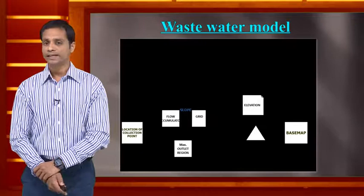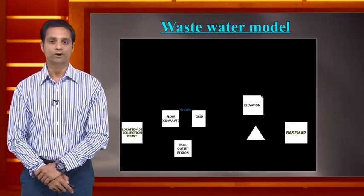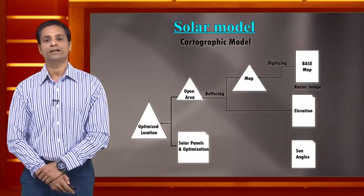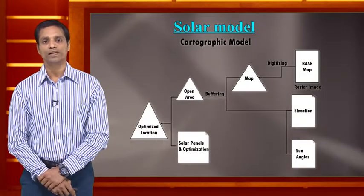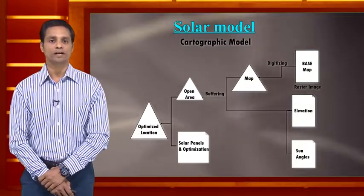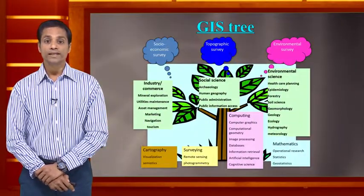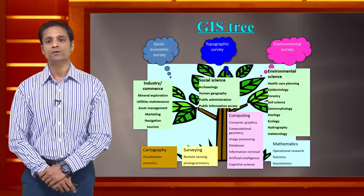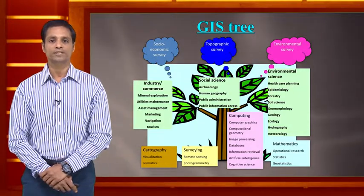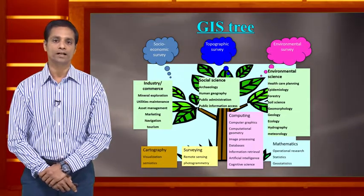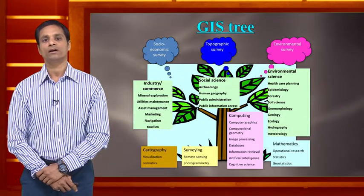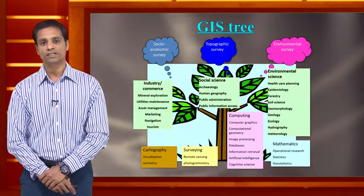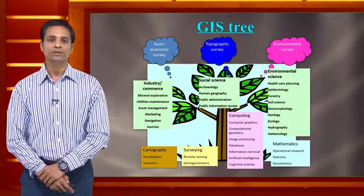Other modeling applications include wastewater recycling using a cartographic model, and identifying optimal solar energy locations when electricity supply is lost — again solved with a cartographic model in the software. GIS applications span environmental survey, topographic survey, socioeconomic survey, industry, social science, computing, surveying, and cartography — all areas where software modeling can be used to solve specific disaster problems related to human health, society, and the environment.